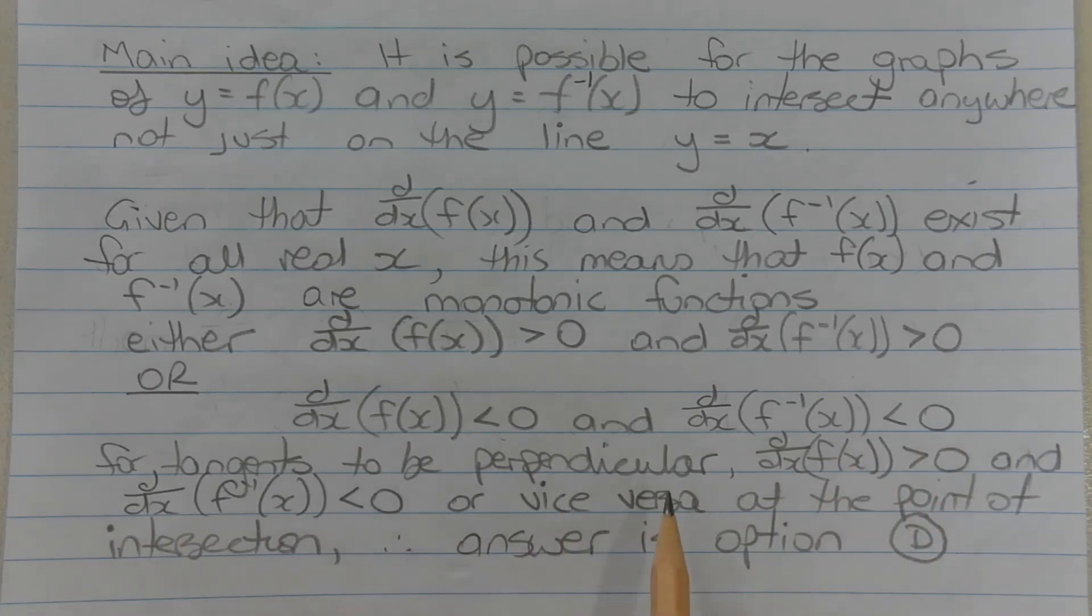For tangents to be perpendicular, the derivative of f(x) must be positive and the derivative of f^(-1)(x) must be negative, or vice versa, at the point of intersection. Therefore, the answer is option D.